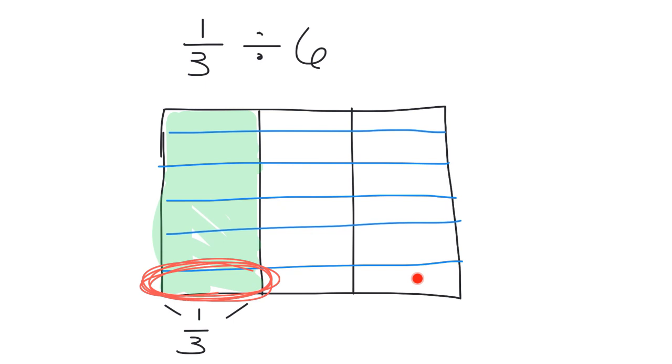It's six times three is eighteen. So there's eighteen pieces. So one-third divided by six is one-eighteenth.